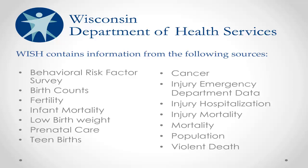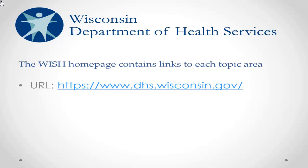Each topic area contains information that is unique and specific to that topic. For example, the age group in the Birth Count module may not be the same as the age group in the Mortality module. The WISH homepage contains links to each topic area. You can either click on this URL or copy and paste it into your browser to begin your query.